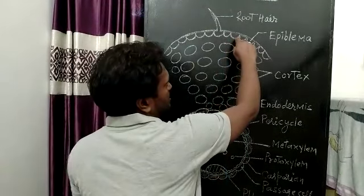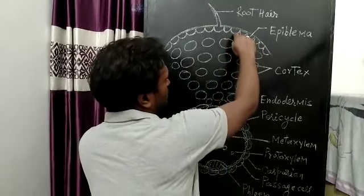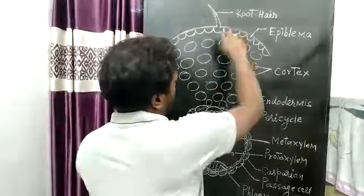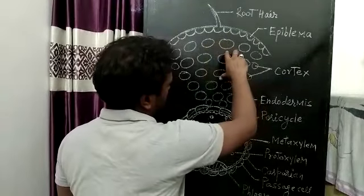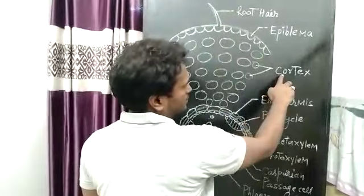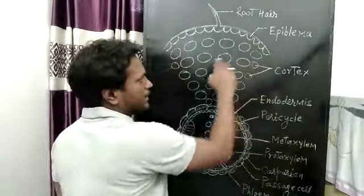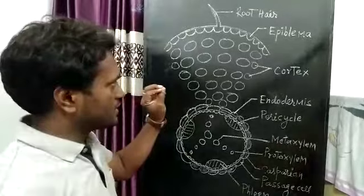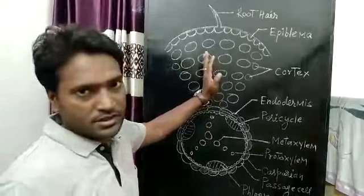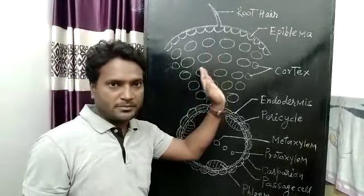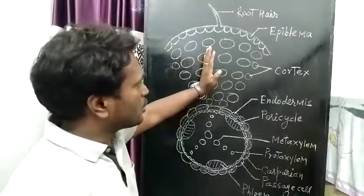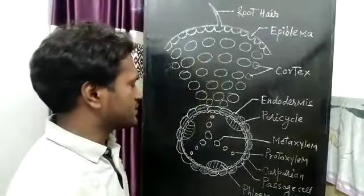Below the Epidermis or Epiblema, in between Epiblema and Endodermis, there are round circular cells made of parenchyma that are known as Cortex. Cortical cells generally lack chloroplasts, but exceptionally some plants contain chloroplasts in their cortex — for example, Trapa. Such roots are known as photosynthetic roots. But generally, cortex cells do not contain chloroplasts.